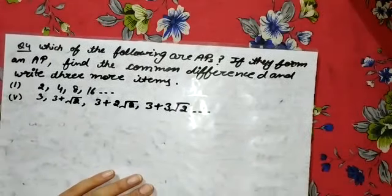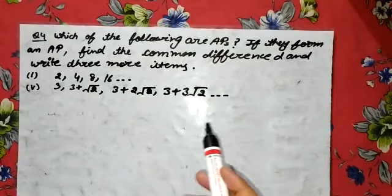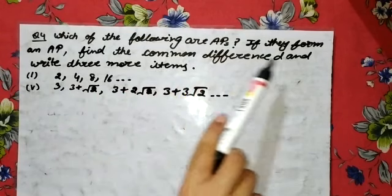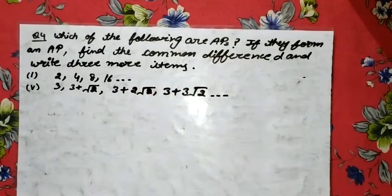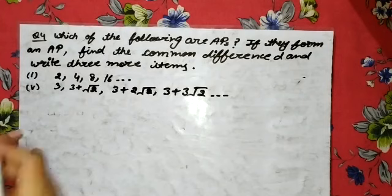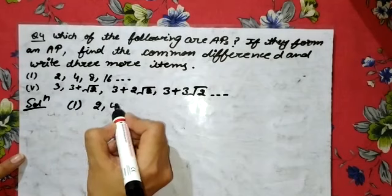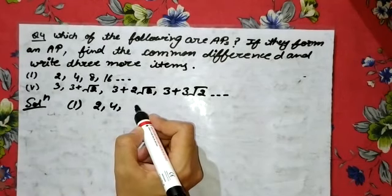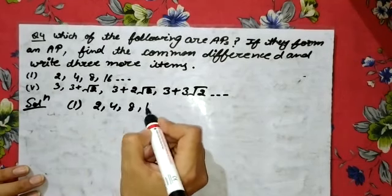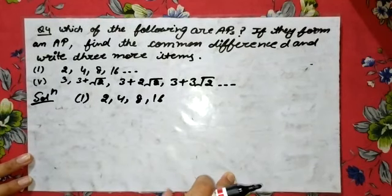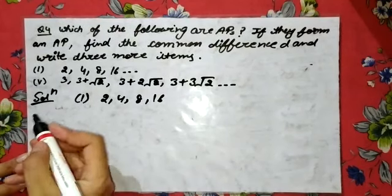Now let us discuss question number 4th. Which of the following are AP? If they form an AP, find the common difference D and write 3 more terms. For AP, your common difference should be the same. You have to keep this in mind. Common difference must be the same.